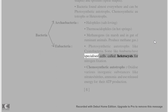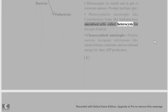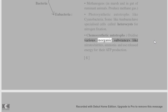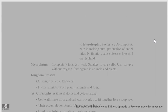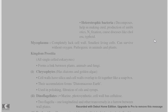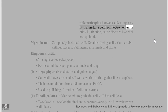Some cyanobacteria like Anabaena have specialized cells called heterocysts for nitrogen fixation. Chemosynthetic autotrophs oxidize various inorganic substances like nitrates/nitrites and ammonia, using the released energy for ATP production. Heterotrophic bacteria act as decomposers, help in making curd, production of antibiotics, and nitrogen fixation, but also cause diseases like cholera and typhoid.